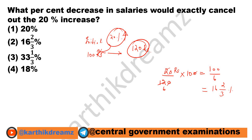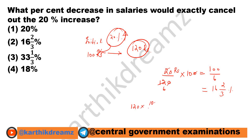So, if we decrease 120 by 16 and 2/3 percentage, we would get 100 rupees. Let us calculate that. We calculate 120 into 100/6, then divide by 100 to eliminate the percentage. This equals 20 rupees. So if we subtract 20 from 120, we will get 100 rupees.